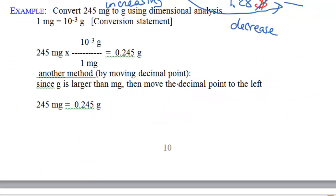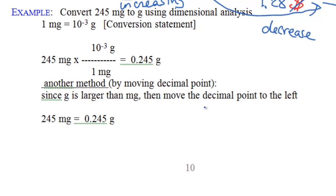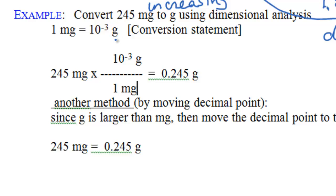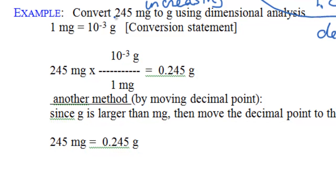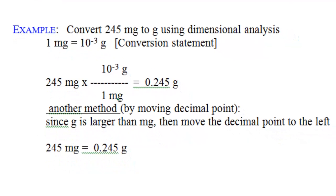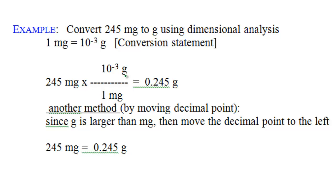From the previous lesson on the international system, 1 milligram is 10 to the power of negative 3 grams. To convert 245 milligrams to grams, multiply by the conversion factor with milligrams in the denominator and grams in the numerator — milligrams cancel. We are multiplying 245 by 10 to the negative 3, which is 1 over 1000, so we divide 245 by 1000 to get 0.245 grams.